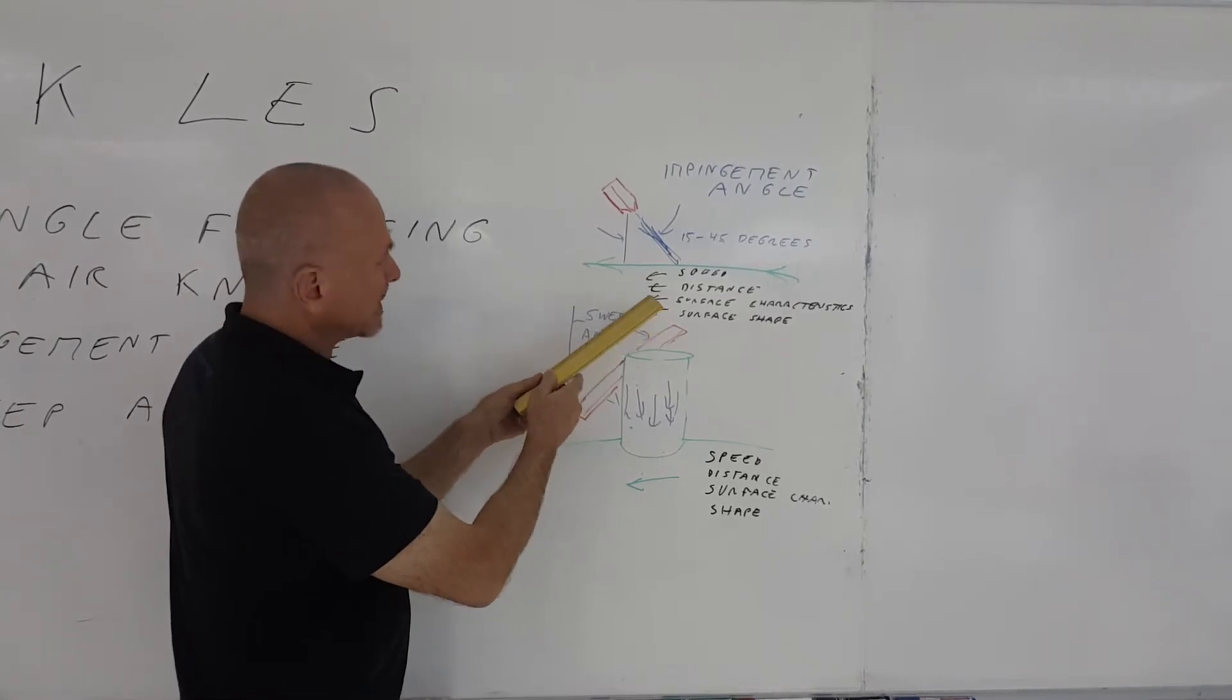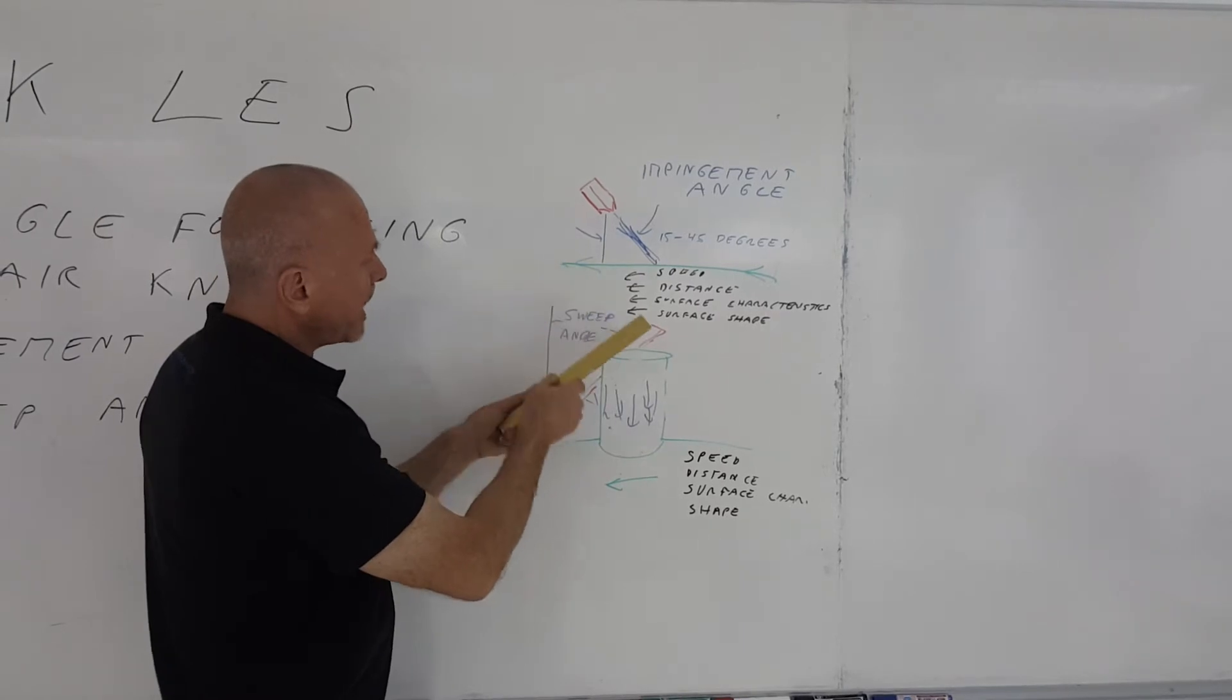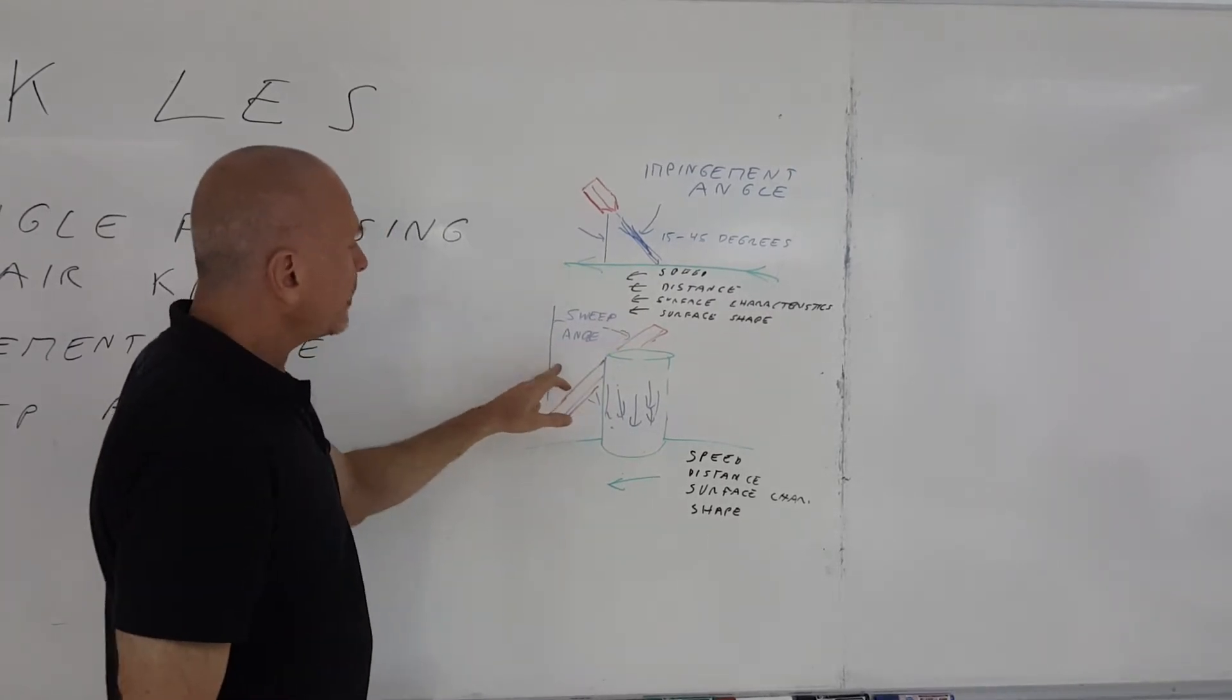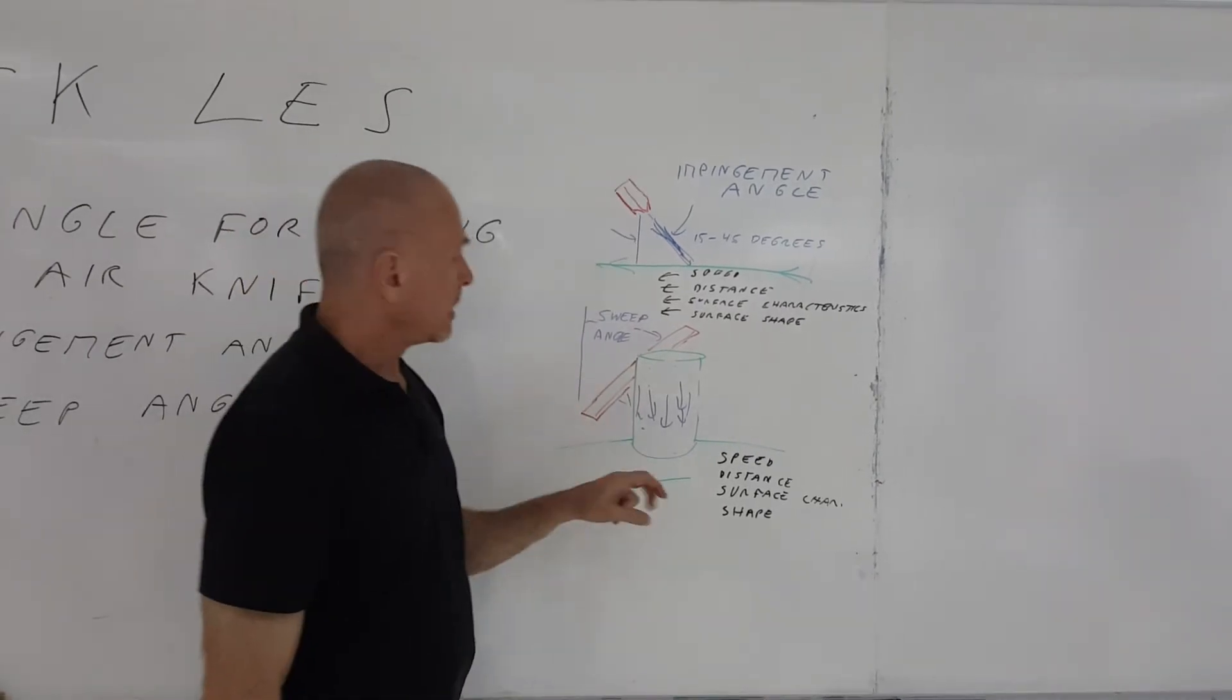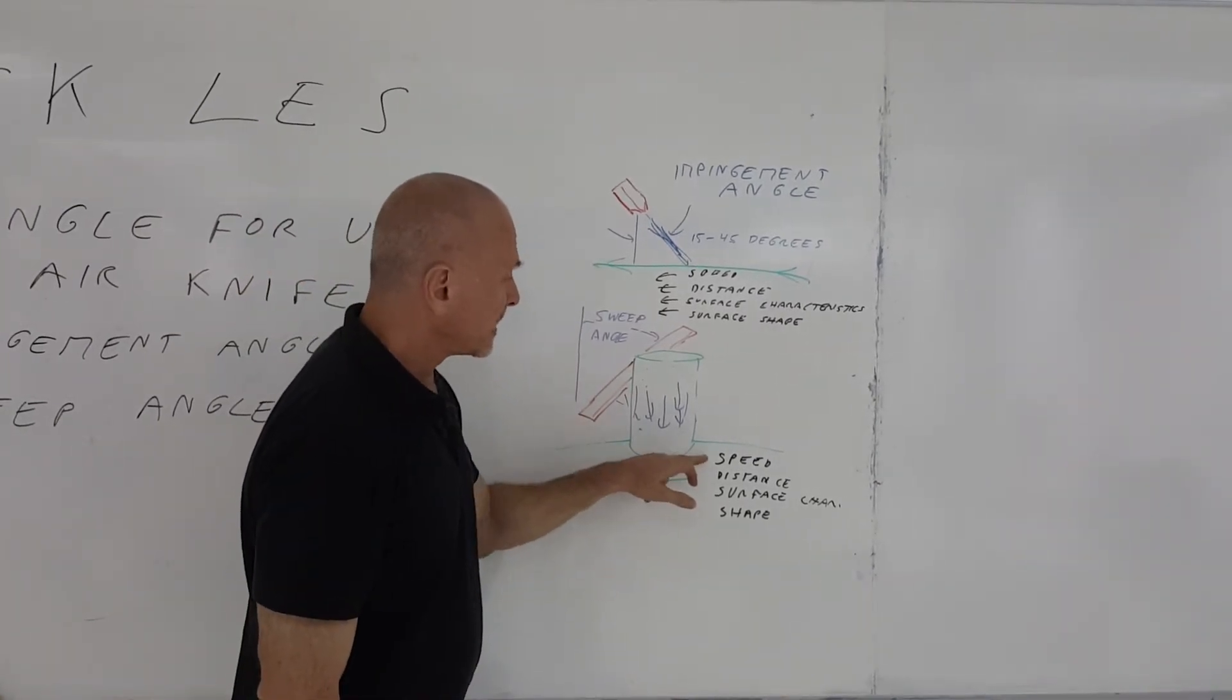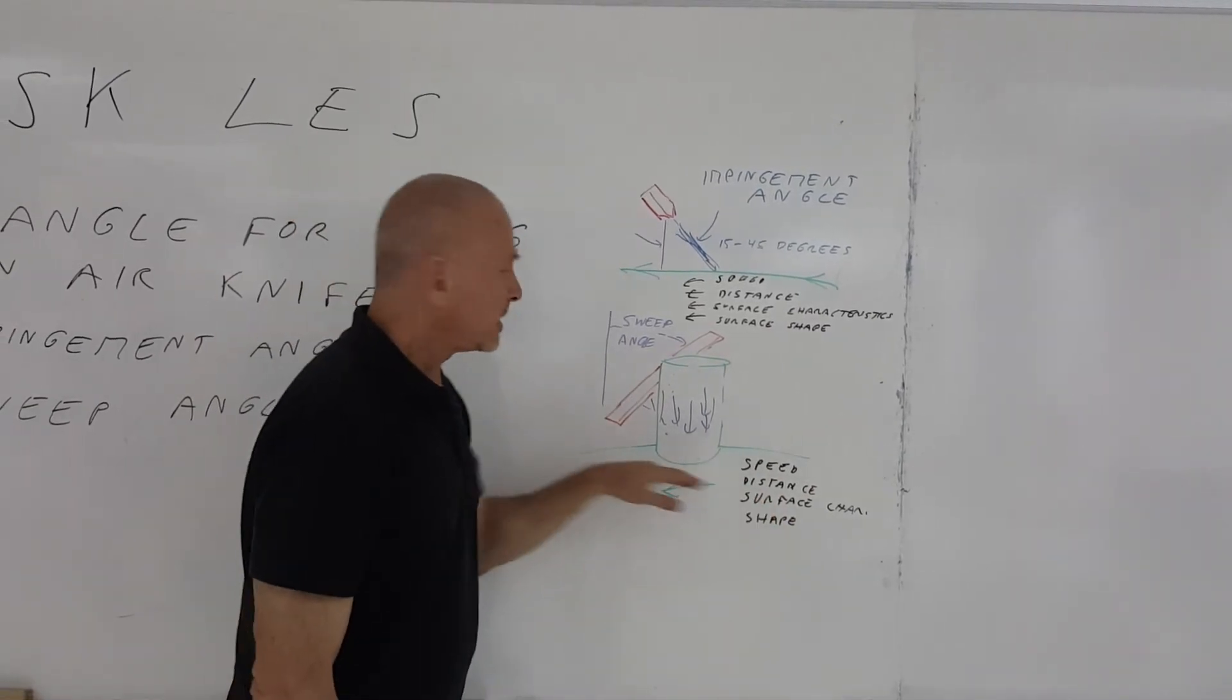You're still going to have the impingement angle to consider, which is probably going to be around 15 degrees in this case. But that sweep angle could be anywhere from 30 degrees to 45 degrees, and again, could be even different. That's going to depend as well on the distance from the surface, the speed, the surface characteristics, and the shape of that surface.